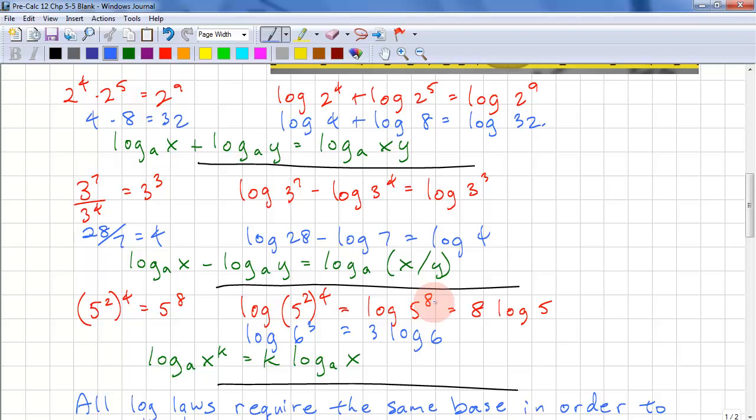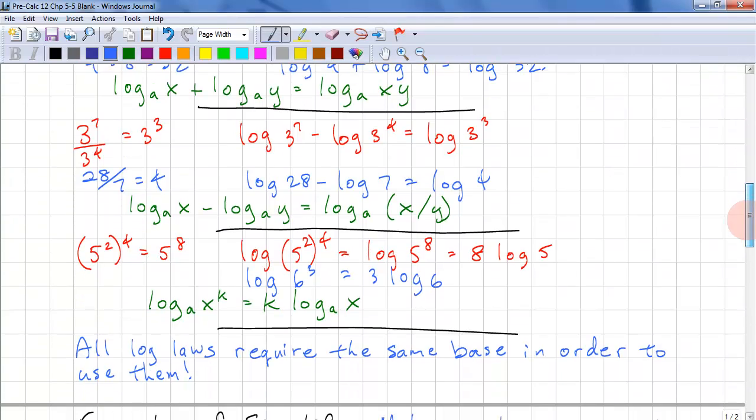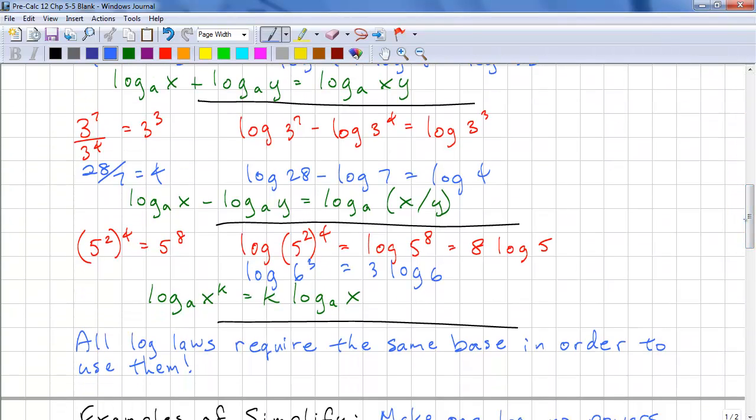Anytime you have a power, you can just bring it out in front of the log. This is 8 times log 5. This is 3 times log 6. We just take the power and pull it outside. And we have our general rule here. Log a of x to the k is equal to k times log a of x. And just remember, all log laws require the same base in order to use them.